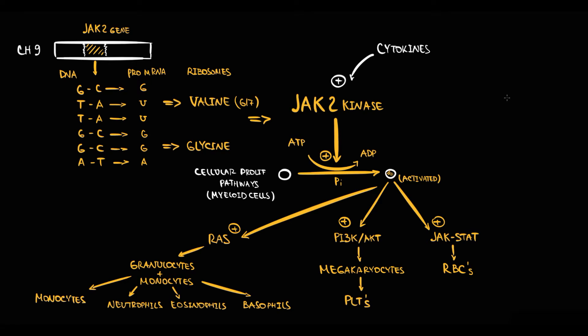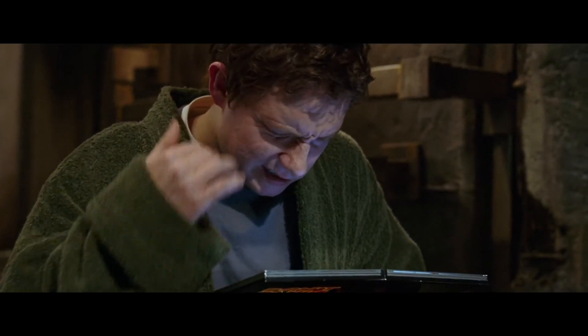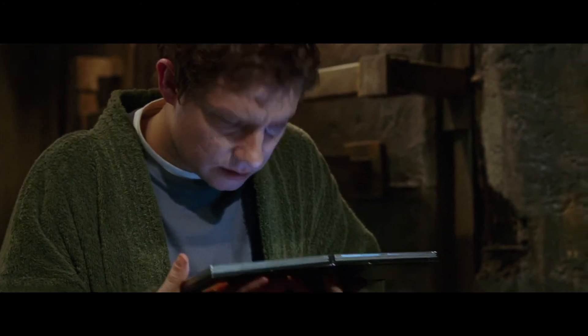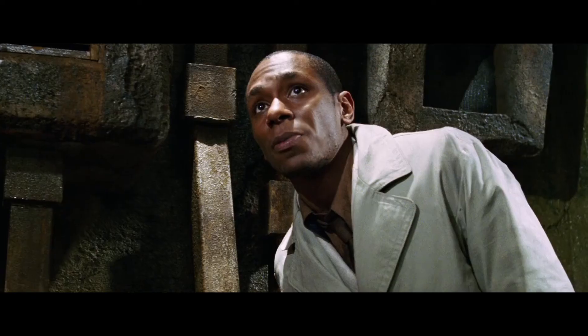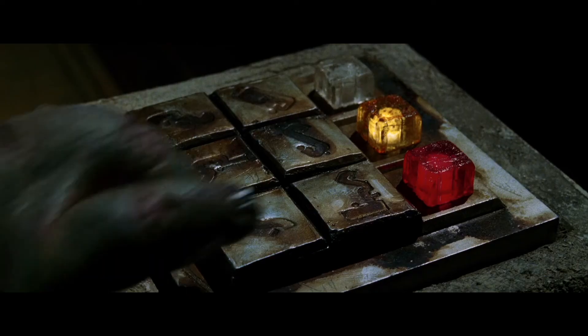In normal conditions, JAK2 kinase cannot decide to increase the mitotic rate or leave it as it is. Because JAK2 kinase does not know how to regulate — this enzyme just phosphorylates or remains passive.